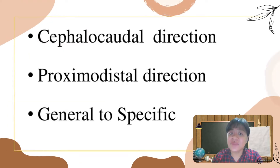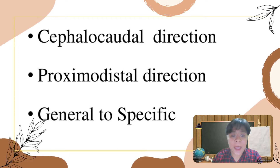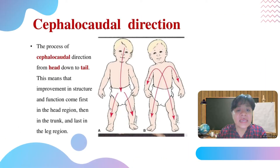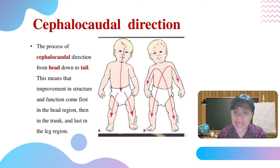There are three directions for the principle of growth and development: cephalocaudal direction, proximodistal direction, and general to specific. The process of cephalocaudal direction is from head down to tail. This means that improvement in structure and function comes first in the head region, then in the trunk, and last in the leg region.